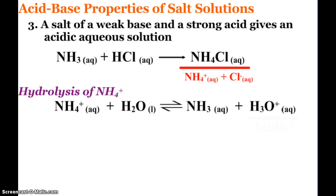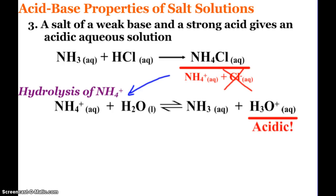If we have a salt made from a weak base and a strong acid, we'll see an acidic solution. Ammonia, a weak base, and hydrochloric acid, a strong acid, react to make ammonium chloride. Chloride, coming from a strong acid, will not hydrolyze. But ammonium will. Ammonium plus water will make ammonia — the conjugate base — but it will also make hydronium. The presence of that hydronium makes the salt water solution acidic.